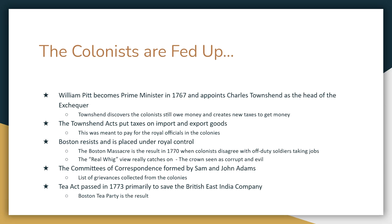Finally, in 1773, we have the Tea Act passed. Its primary job is to save the British East India Company from going bankrupt. The British East India Company would be the only authorized agent to sell tea in the colonies, with a portion of sales proceeds going to the company. In December 1773, about 5,000 members of Boston's population asked Governor Thomas Hutchinson to send the tea back to England. He refused, and later that evening about 60 men disguised themselves as Mohawks, jumped on a couple of tea boats, and threw about 10,000 British pounds worth of tea into Boston Harbor.